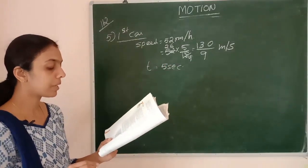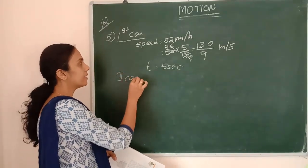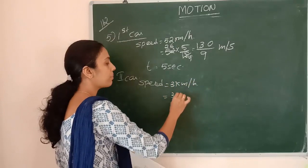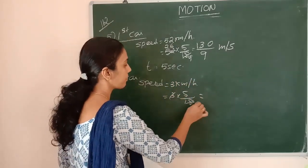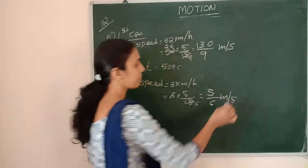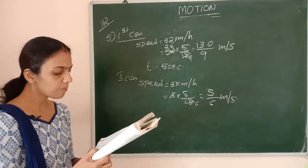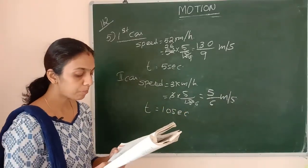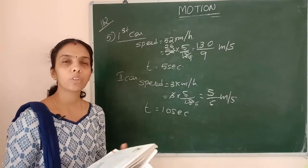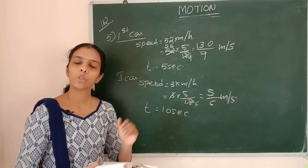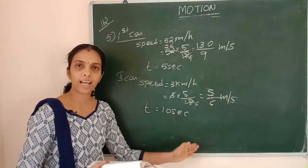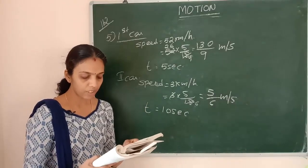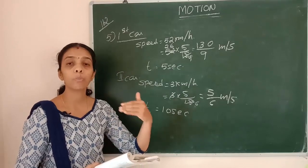Another driver going at 3 km per hour applies his brakes slowly and stops in 10 seconds. For the second car, speed is 3 km/h, which equals 3 times 5 over 18, giving 5 over 6 — that is 0.8 meters per second — and time to stop is 10 seconds. We need to plot the speed versus time graph for both cars, with speed along the y-axis and time along the x-axis.